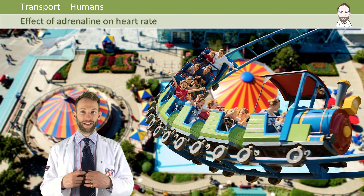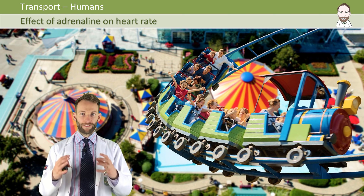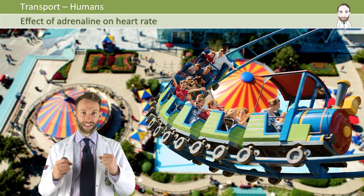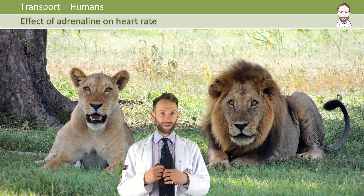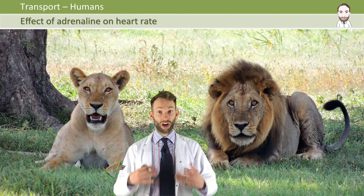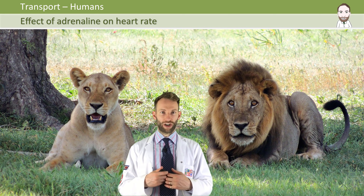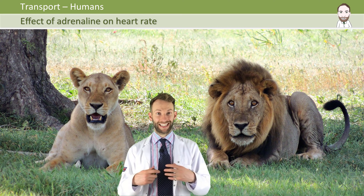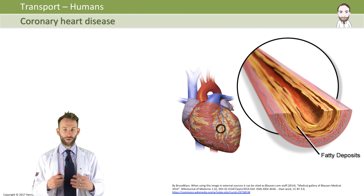Another way to alter the heart rate is through hormones, such as adrenaline. Adrenaline is a hormone produced by the adrenal glands in times of stress. It prepares the body for fight or flight — either to fight off a predator or to run away as quickly as possible. In order to do those things you need your heart rate to really increase, so adrenaline increases the heart rate to give your cells more oxygen for respiration.